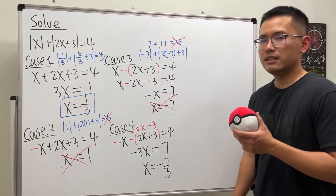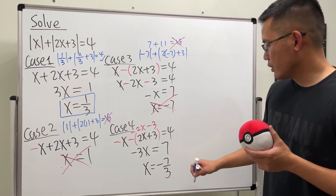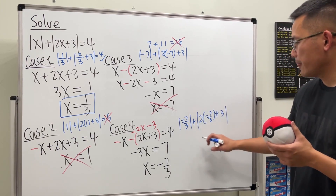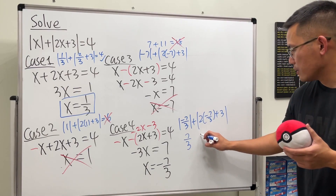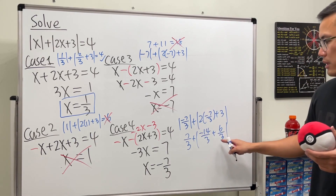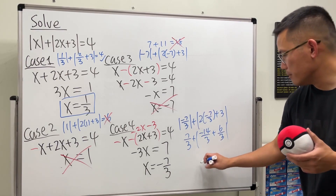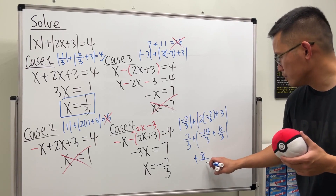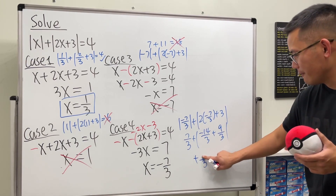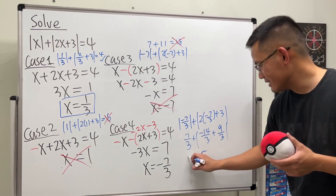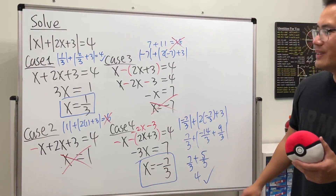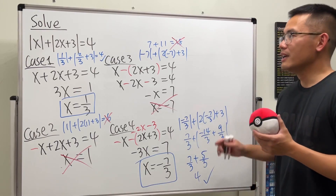Case 4 — plug in x = negative 7/3: we get absolute value of negative 7/3 plus absolute value of 2 times negative 7/3 plus 3. That's 7/3 plus absolute value of negative 14/3 plus 9/3, which is 7/3 plus absolute value of negative 5/3, giving 7/3 plus 5/3 equals 12/3 equals 4. That checks out! So x = 1/3 and x = negative 7/3 are the two valid answers.